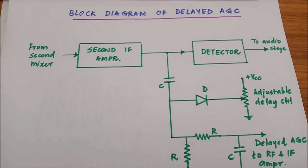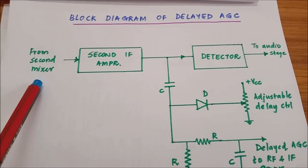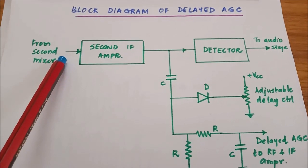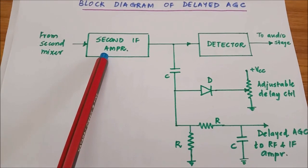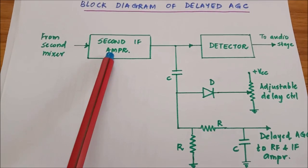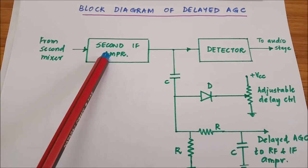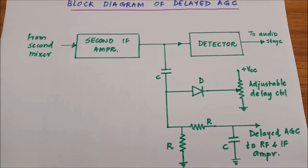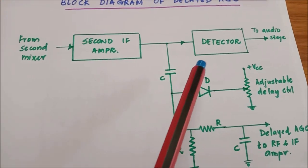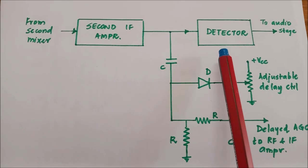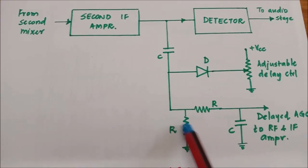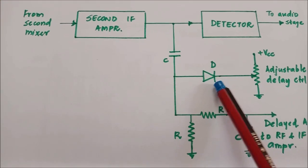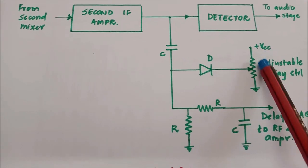We will now look at the block diagram of a delayed AGC circuit. In any radio receiver there are one or two stages of frequency translation before the signals are brought to intermediate frequency. What is shown here is the last block of IF amplifier just before detection — the signals are in the intermediate frequency range, amplified and ready for detection. The detector shown here is the detector discussed in the previous class, and the added section is the AGC mechanism being included in the receiver.